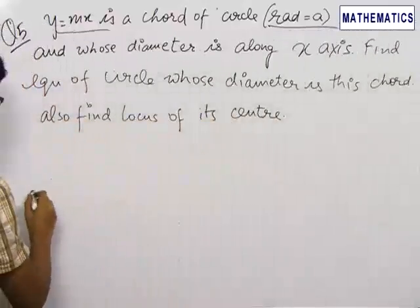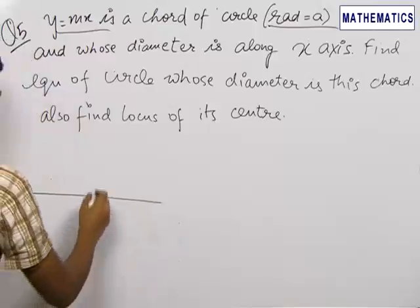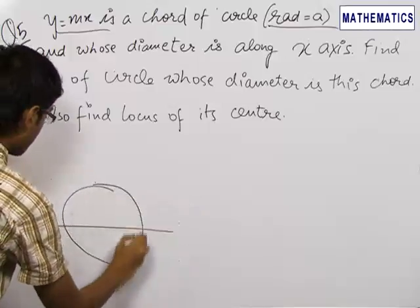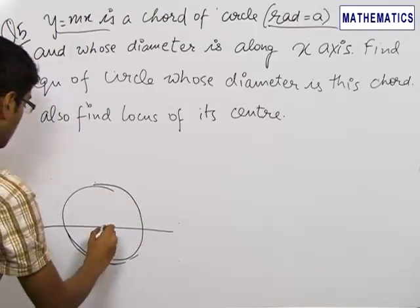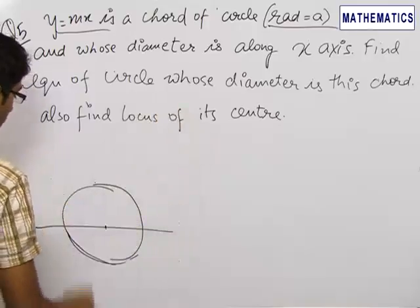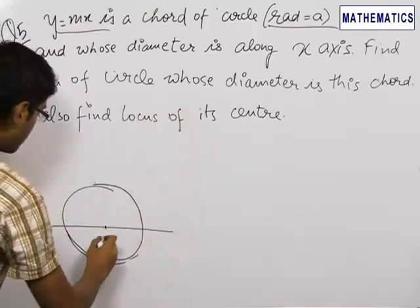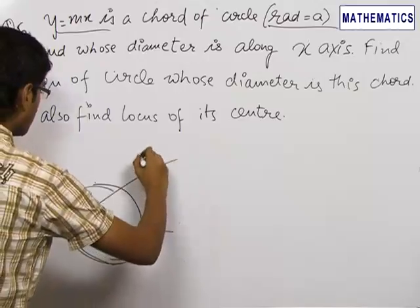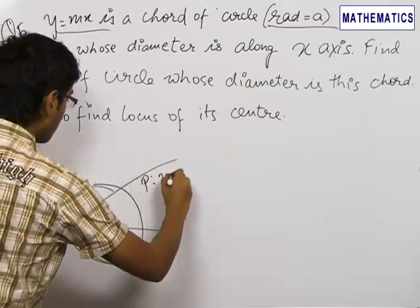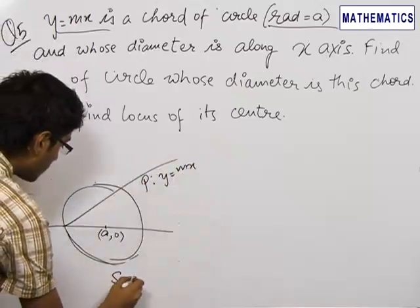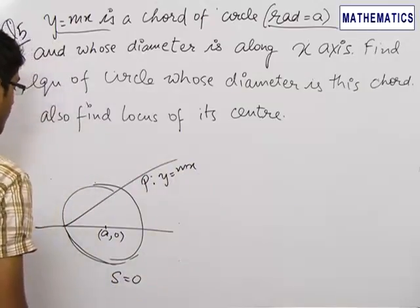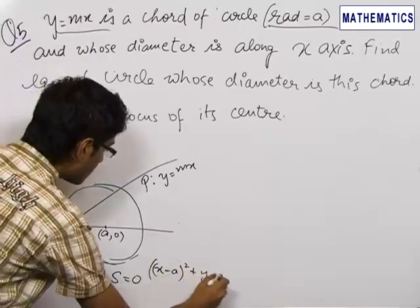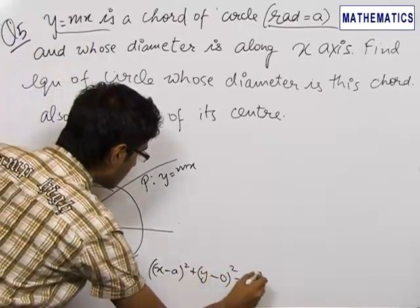Now, in order to proceed with this question, we make the figure. This is a circle whose radius is equal to a and whose diameter is along the x-axis, so its center will be at (a, 0). Let us say this line P is y equals mx, and let us call this circle S equals 0, which is (x minus a) squared plus y squared equals a squared.